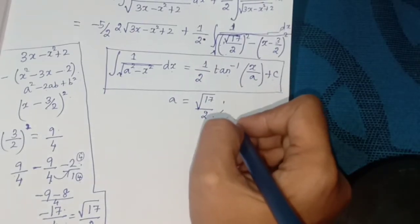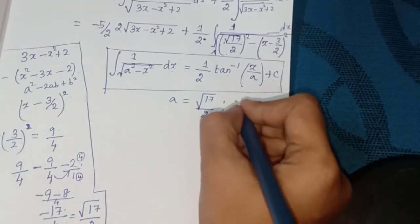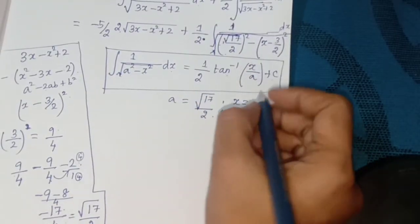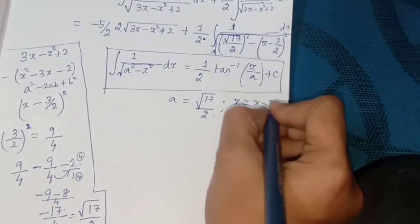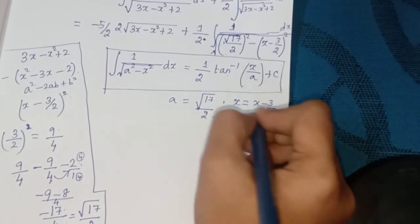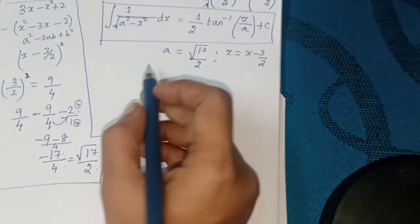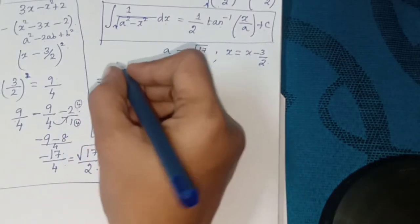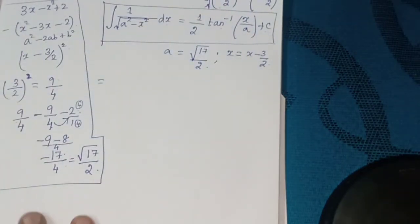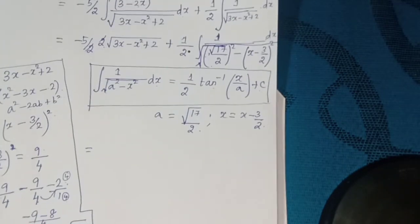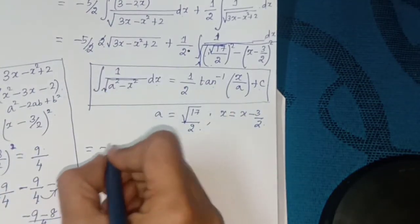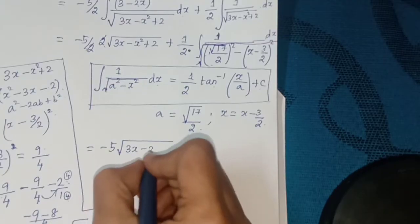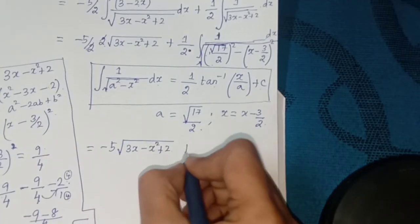Here a = √17/2 and x corresponds to (x - 3/2). Substituting into the formula, the factor of 2 in the denominator cancels with the 2 outside, giving: -5√(3x - x² + 2) + (1/2) sin⁻¹((2x - 3)/√17) + C.